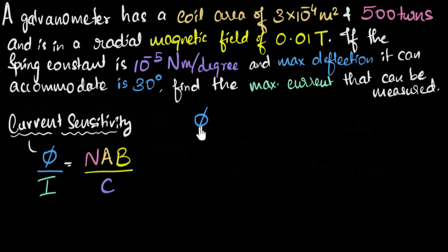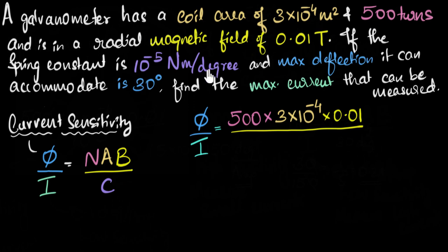So let's calculate the current sensitivity. The current sensitivity, φ divided by I, happens to be number of turns, which is 500 times the coil area, which is 3×10^-4. And everything is in SI units. We need to take care of the units. Times the magnetic field, which is 0.01 divided by C, which is the spring constant, 10^-5.